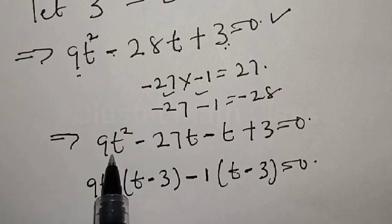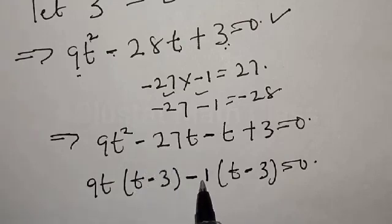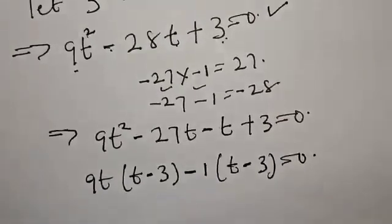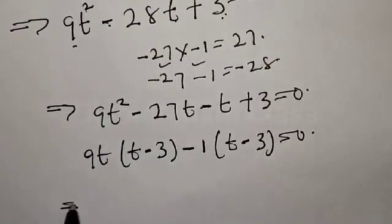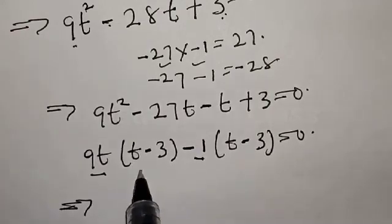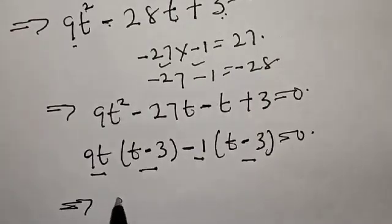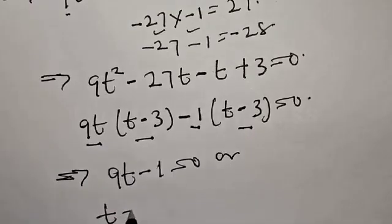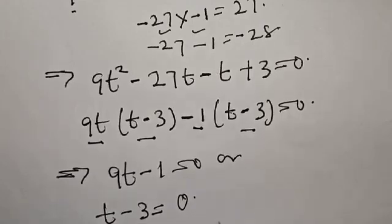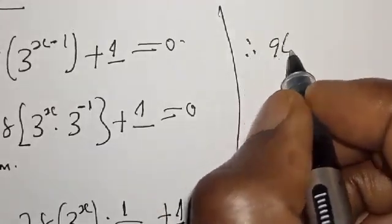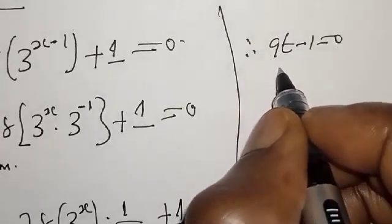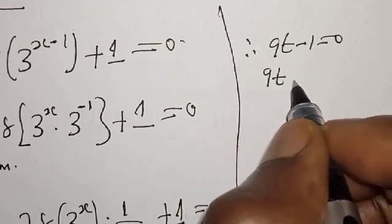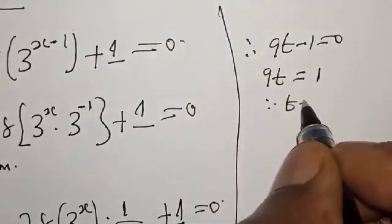Now let's factor this out. We have 9t into t minus 3, minus 1 into t minus 3, equal to 0. Let's verify: 9t times t gives 9t squared; 9t times minus 3 gives minus 27t; minus 1 times t gives minus t; minus 1 times minus 3 gives plus 3. This implies 9t minus 1, times t minus 3. So we have 9t minus 1 equal to 0 or t minus 3 equal to 0. Therefore t is equal to 1 over 9, or t is equal to 3.